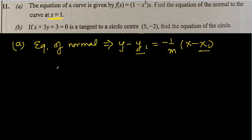We'll find y for this. M is the gradient of the tangent. We'll find the gradient of the tangent, and the negative reciprocal of that will be used for the normal. y and x are random points on the curve so they need not be changed. We need to find y and m; x1 is already known.